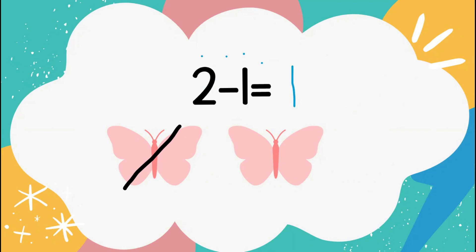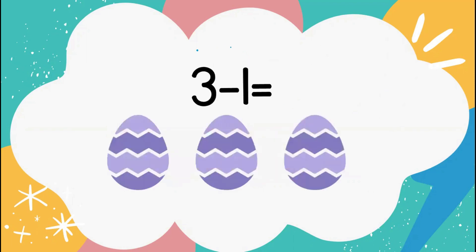Now we're going to do 3 minus 1 equals. Let's cross off 1 of these eggs and see how many we're left with. Let's count — ready? Here we go: 1, 2. Good job. We had 3 eggs, we took away 1 egg, and now we're left with 2.